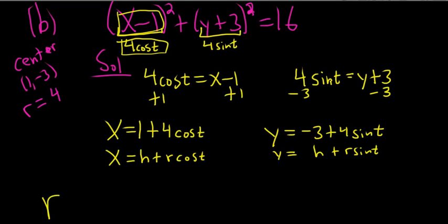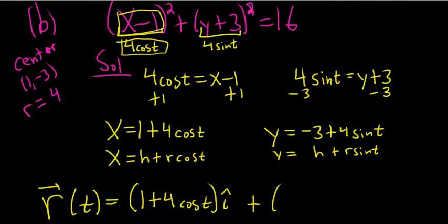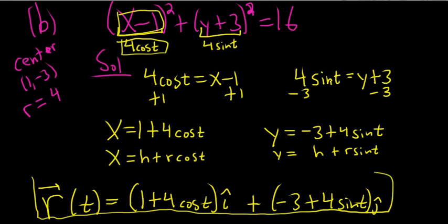We can write the answer down. So r of t, with our little fancy vector symbol, is going to be 1 plus 4 cosine t, that's our x, i hat, plus the negative 3 plus 4 sine t, j hat. And that would be our vector valued function.